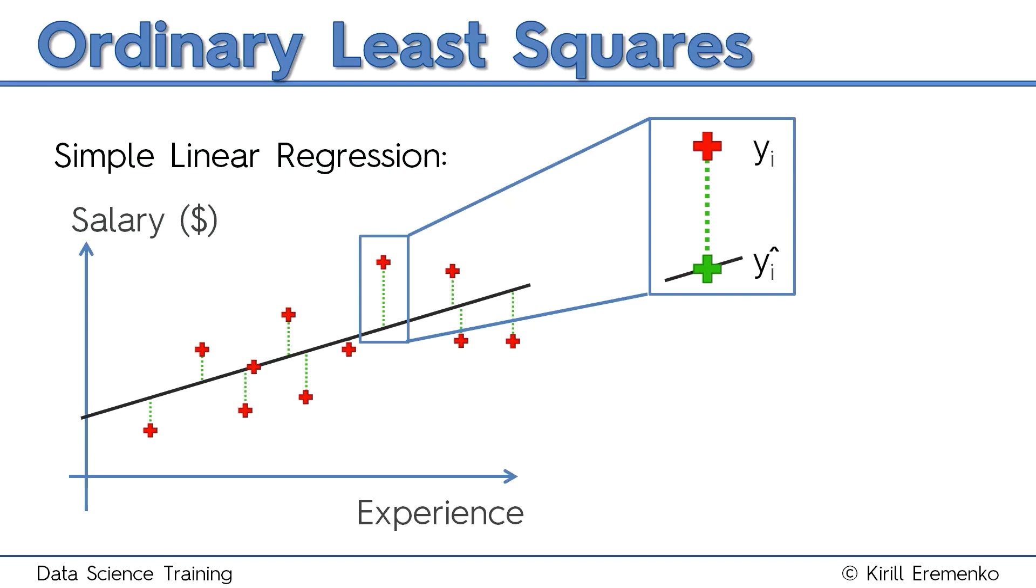So basically with that level of experience, where does the model predict that he would be earning? And so the green line, therefore, is the difference between what he's actually earning and what he's modeled to be earning.